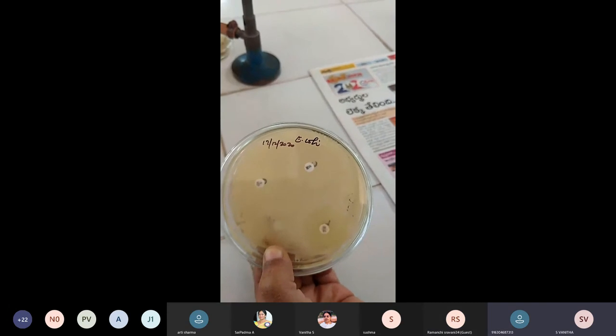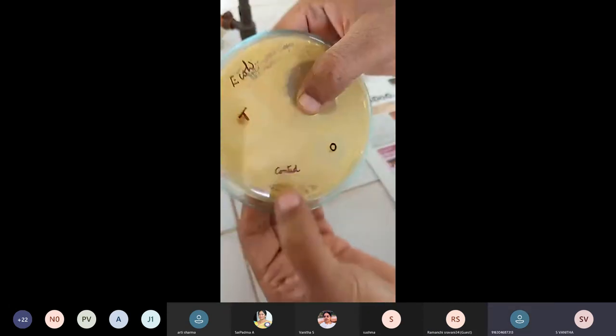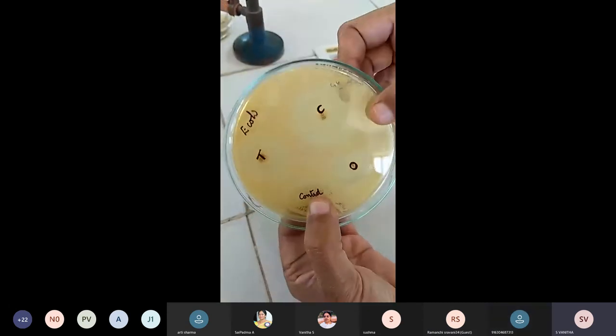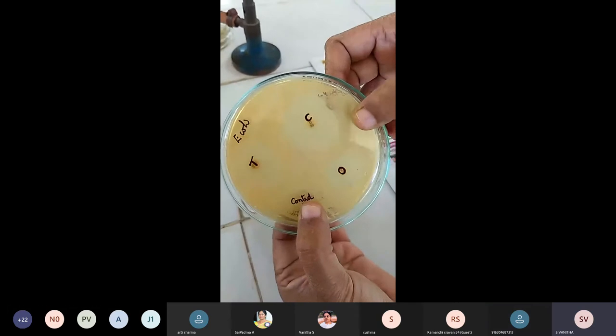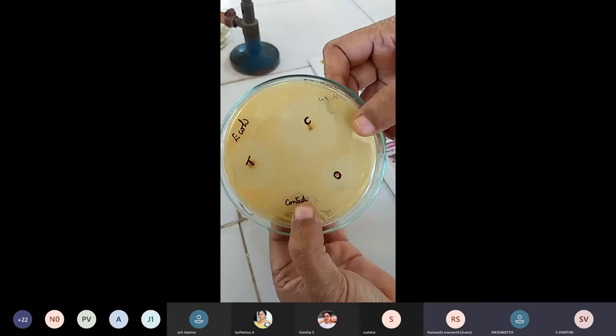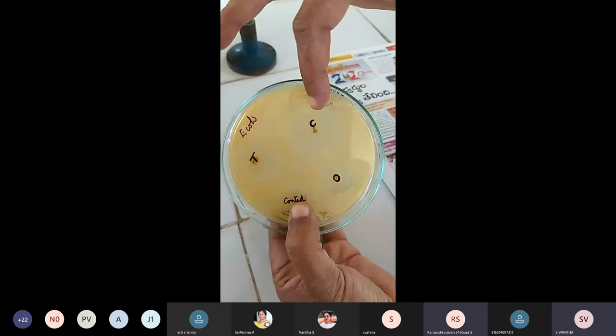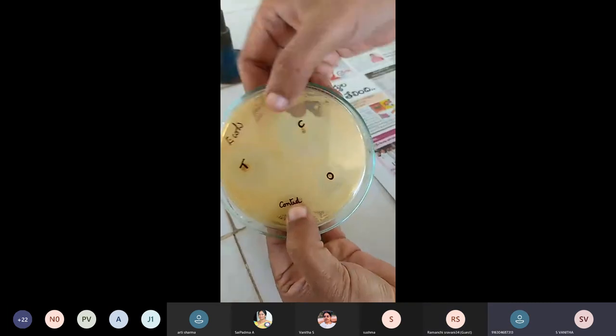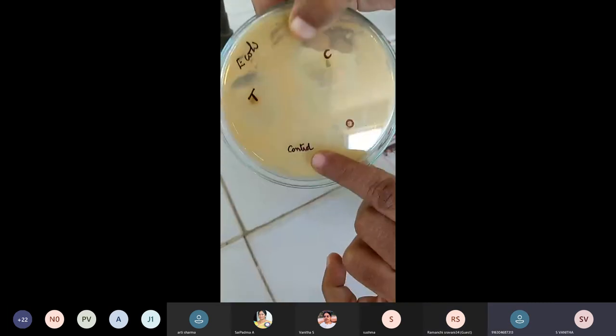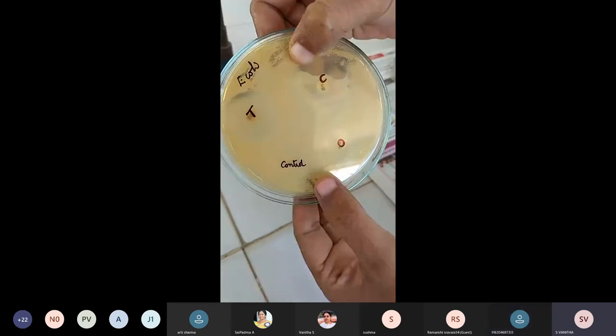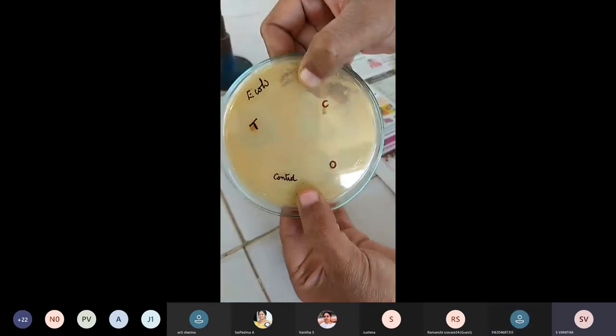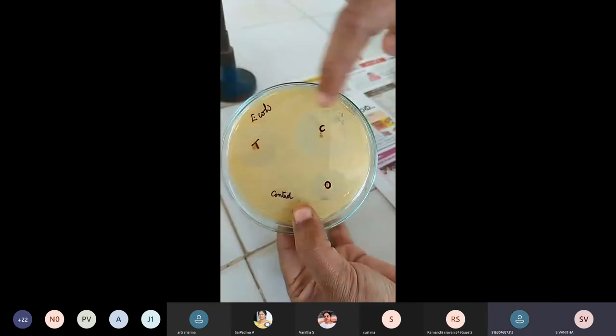Are you able to see the zone of inhibition? Is there any difference? We have labeled here tetracycline, this is chloramphenicol, this is oxacetylene, and this is the control. We are getting the difference. You see the zone of inhibition, how much different each one is.